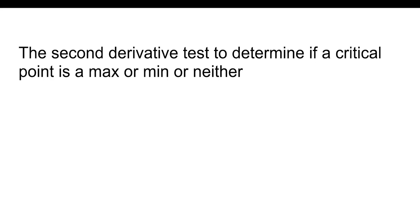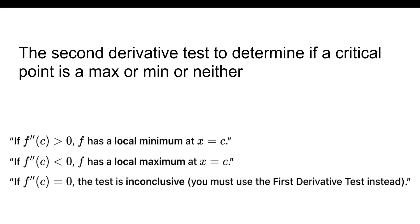The second derivative test is also used to determine if a critical point is a max or min. If f''(c) is greater than 0, there is a local minimum at x = c. If f''(c) is less than 0, f has a local maximum at x = c. And if f''(c) equals 0, the test is inconclusive and you have to use the first derivative test instead. You have to know these two derivative tests — they pop up a lot in FRQs.